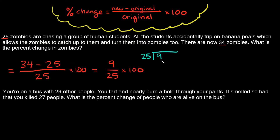25 doesn't go into 9, so we put a decimal point and a zero. Now, does 25 go into 90? Yes it does. An easy way to think about counting by 25s is to think of quarters — like with money. One quarter is 25 cents, two quarters is 50 cents, three quarters is 75 cents, four quarters is 100 cents or a dollar. So 25 goes into 90 three times, and three times 25 is 75. Then you subtract: 90 minus 75 equals 15.